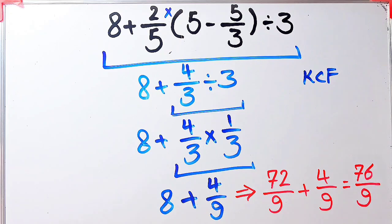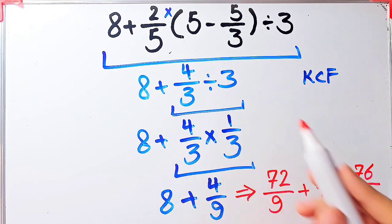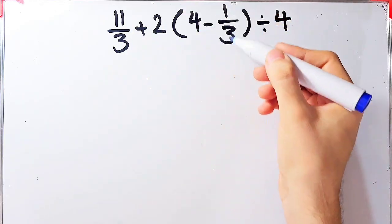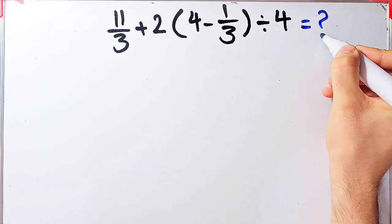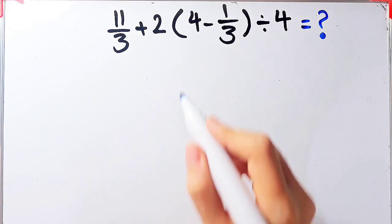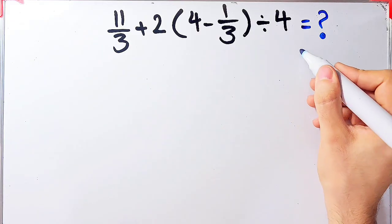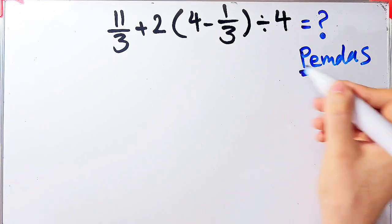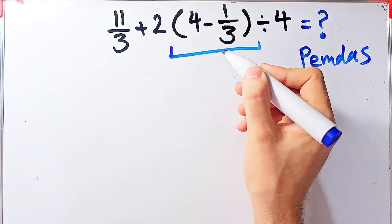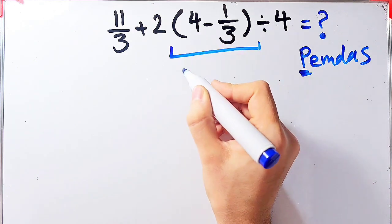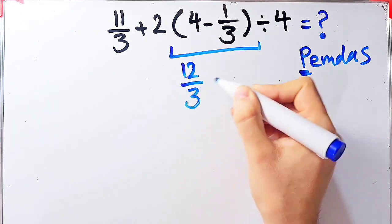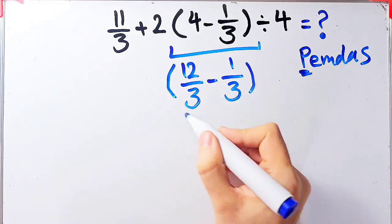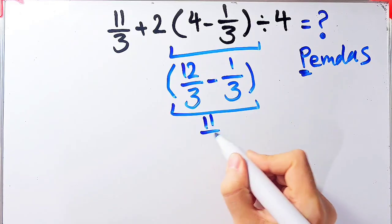Let's solve another question about the PEMDAS rule. The question is 11 over 3 plus 2 times open parenthesis 4 minus 1 over 3 close parenthesis, divided by 4. To solve this, we follow the PEMDAS rule and first simplify the parenthesis. Inside the parenthesis we have 4 minus 1 over 3. Since the denominator is 3, we write 4 as 12 over 3. 12 over 3 minus 1 over 3 equals 11 over 3.